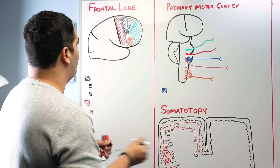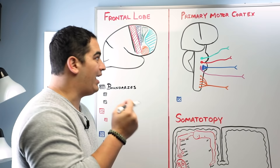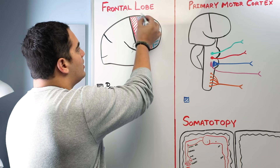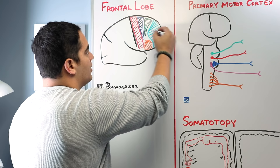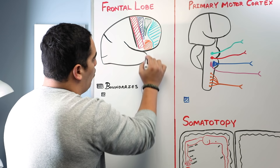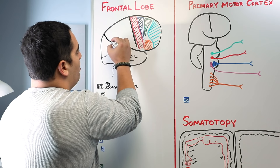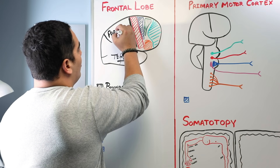The first thing we have to do when we talk about the frontal lobe is develop an understanding of its boundaries. The way I like to remember the boundaries is how do we separate this lobe from the lobes next to it. This lobe here with the wing-like shape is called your temporal lobe, and we're going to talk about that separately in another video.